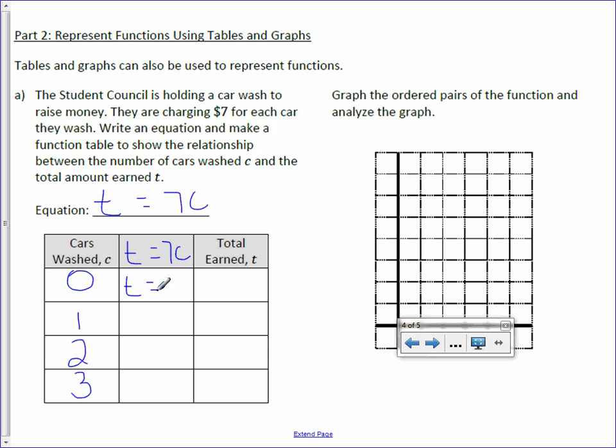In the center column, we're going to start plugging in our C values. T equals 7 times 0, which is 0. T equals 7 times 1, which is 7. T equals 7 times 2, which is 14. And T equals 7 times 3, which is 21.